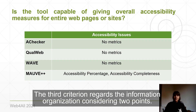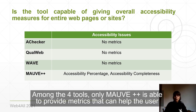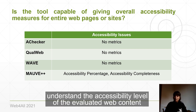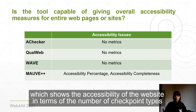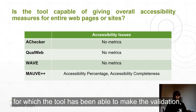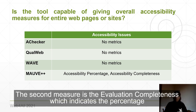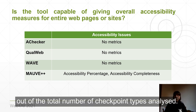The third criterion regards information organization, considering two points. The first point regards the capability of the tool to give overall accessibility measures. Among the four tools, only Mauve++ is able to provide metrics that help the user understand the accessibility level of the evaluated web content. It provides two accessibility measures: the accessibility percentage, which shows the accessibility of the website in terms of the number of checkpoint types successfully evaluated over the total number evaluated; and the evaluation completeness, which indicates the percentage of evaluated checkpoint types for which the tool has been able to make a validation out of the total number of checkpoint types analyzed.